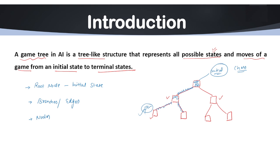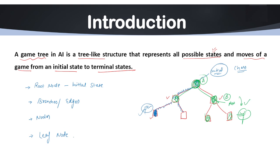Another component is nodes — these are the possible states. Another is the leaf node. As you can see, this is the root node, and these two are the leaf nodes of root node A. If we consider another node B as a root node, then its children are the leaf nodes of B. The leaf node represents the terminal state — where the game ends.